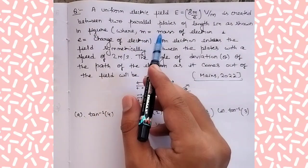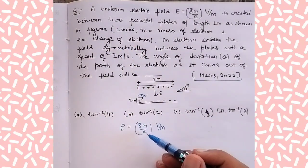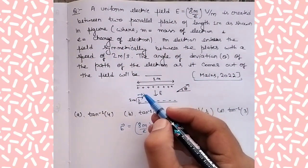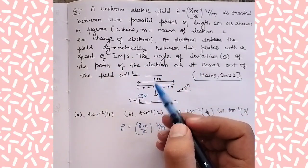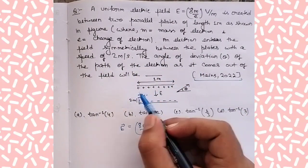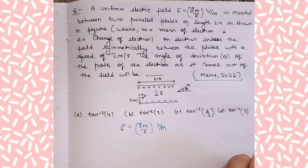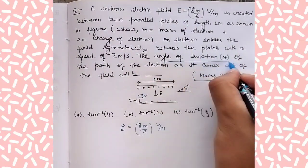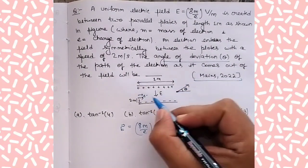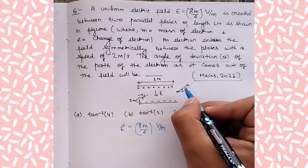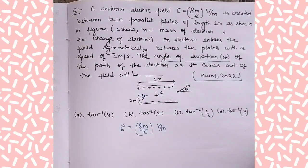Here small m is the mass of the electron and small e is the charge of the electron. The electron enters between the plates symmetrically with a speed of two meters per second, and we have to find the angle of deviation of the path of the electron as it comes out of the field.